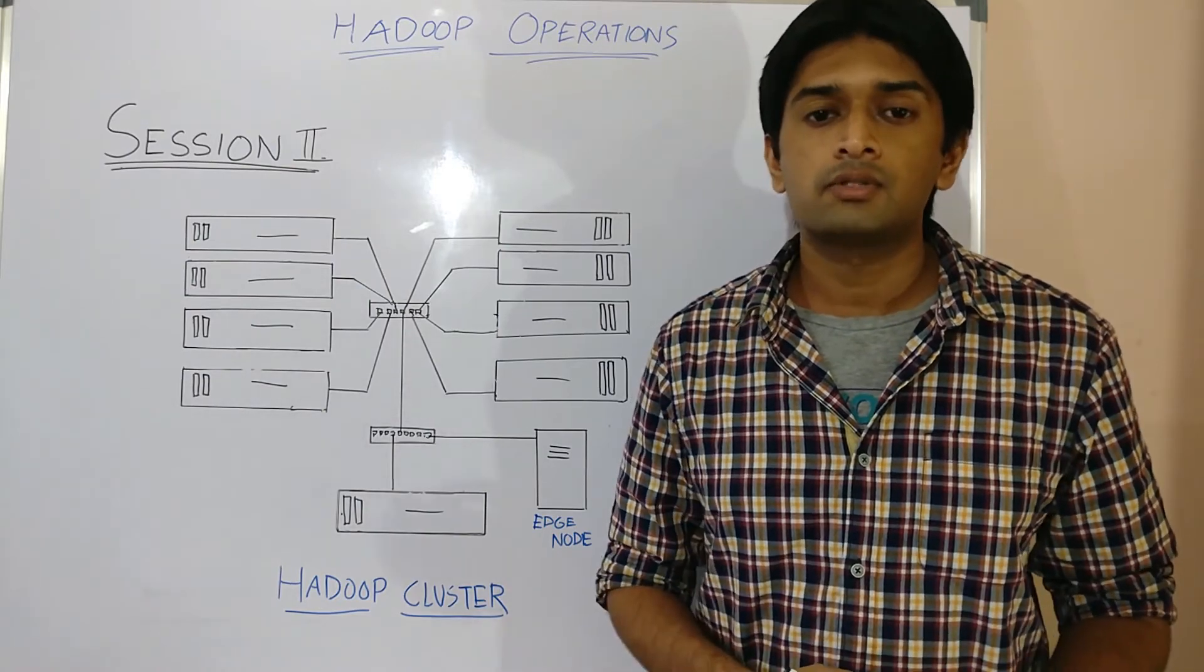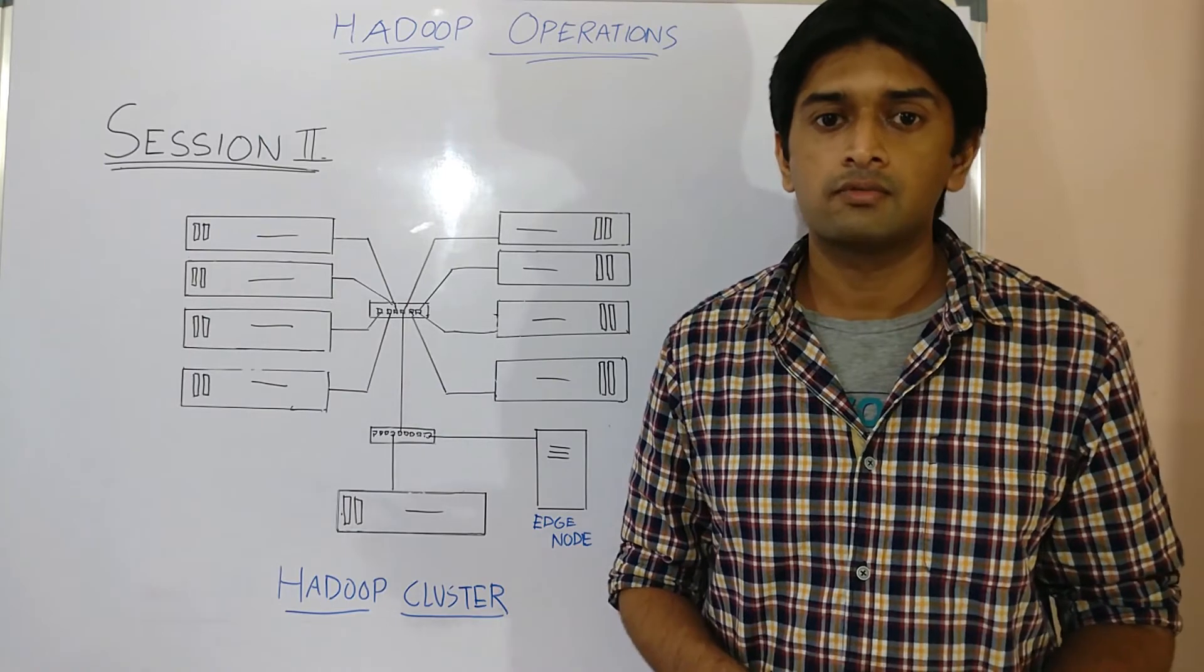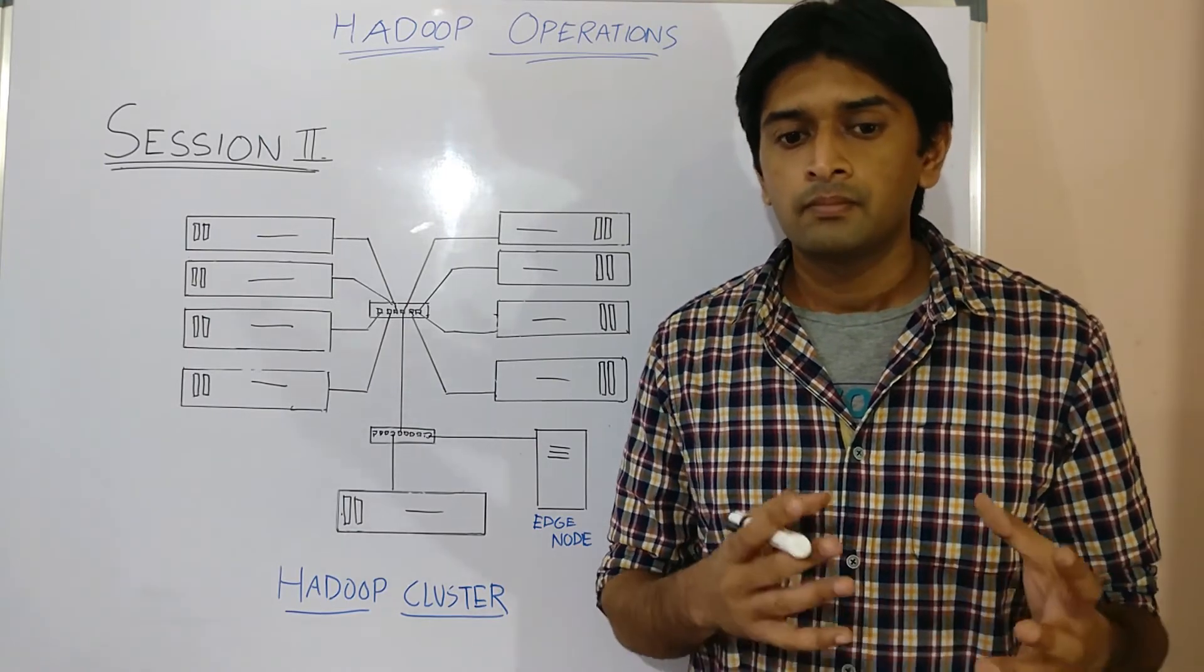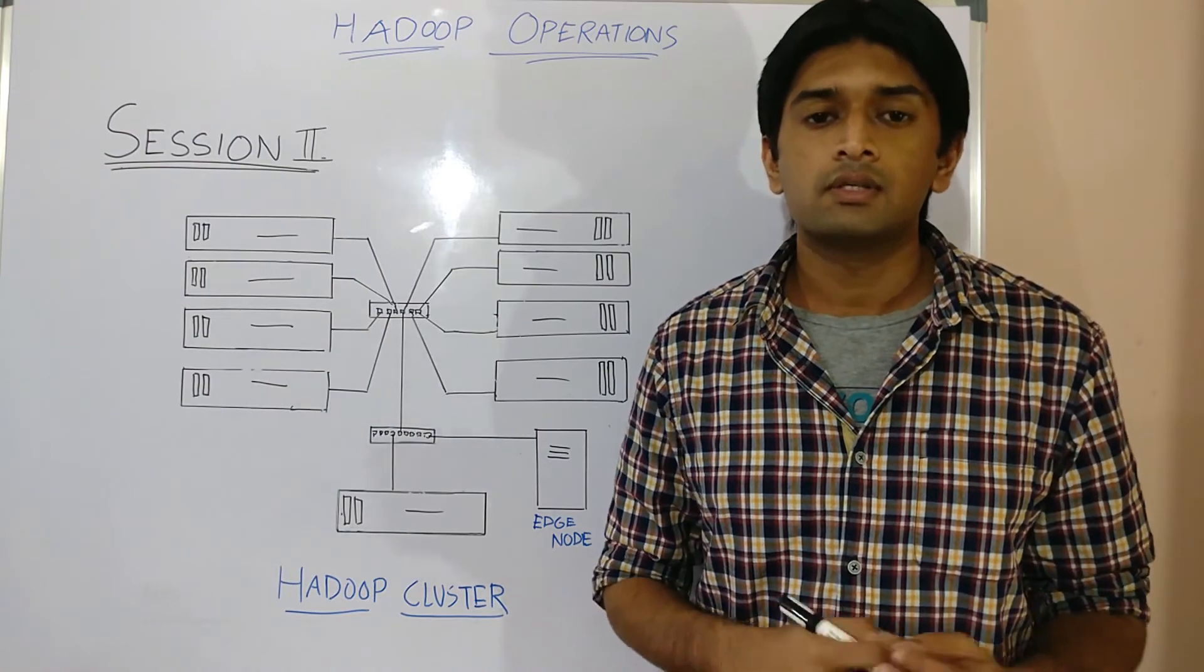Both the storage layer and the processing layer can be said to consist of a master service and a slave service. For example in case of the storage layer which is HDFS, the master service is called the name node.